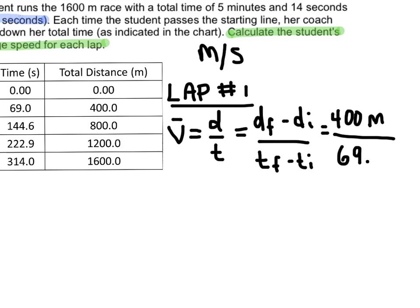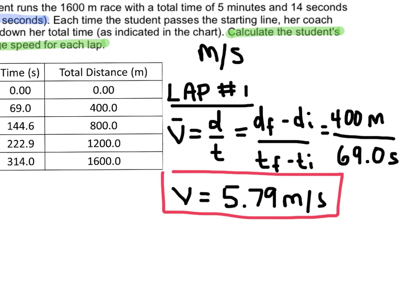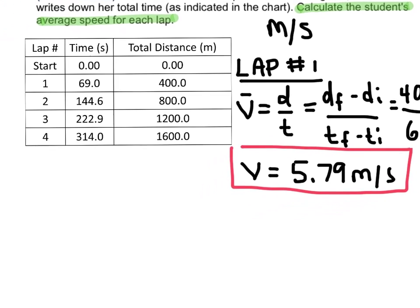And so we have 400 divided by 69 seconds. And so we get an average speed here of 5.79 meters per second. And so there's the first lap, let's circle that one, and let's move on to the second lap here.